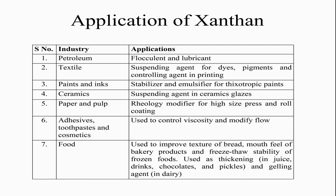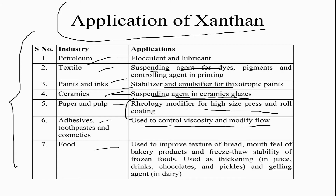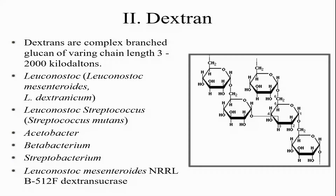Xanthan has many applications: in petroleum as a flocculant and lubricant; in textiles as a suspending agent for paints and inks; as stabilizers and emulsifiers for ceramics; as a rheology modifier for paper and pulp; in adhesives to control viscosity and modify flow; and in food for improving texture and increasing shelf life.